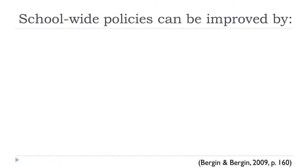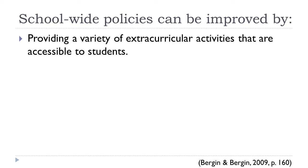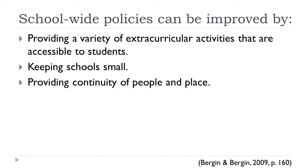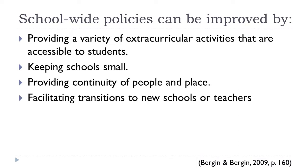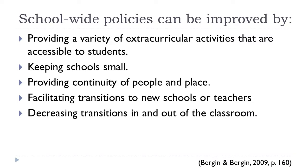In addition to what teachers can do, there are school-wide policies that can be improved to support caring. One idea is to provide a variety of extracurricular activities accessible to students — those struggling academically might establish relationships there, which could motivate greater academic engagement. Keeping schools small can develop a better sense of community between teachers and students. Other suggestions include providing continuity of people in place, facilitating transitions to new schools or teachers, and decreasing transitions in and out of the classroom.